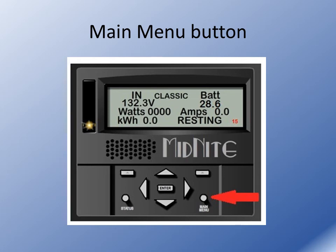The main menu button will bring you into the main menu, and it also will back you up. If you get three or four stages down into a menu in the Classic and you want to back up a screen, simply press the main menu button once. If you want to go back to the beginning, repeated pushing of the main menu button will always bring you back to the wizard, which is the start of the main menu. From there you can scroll to the right to pick the category you want.